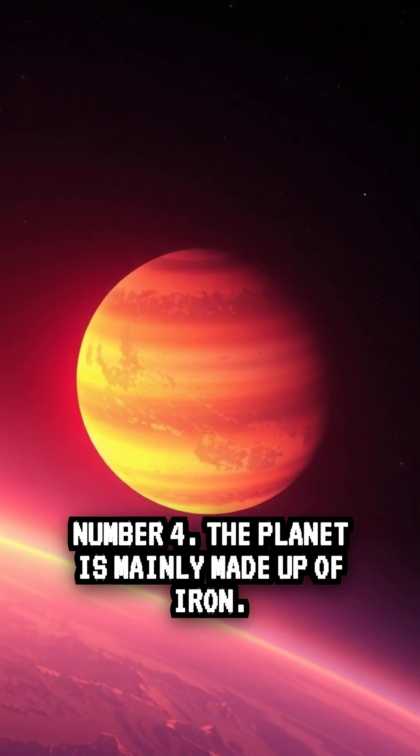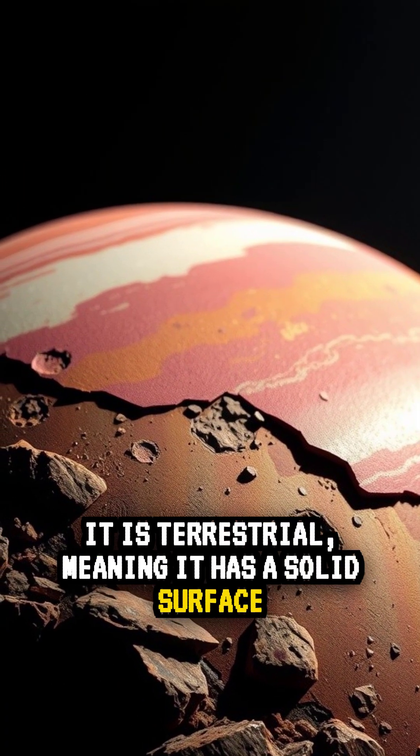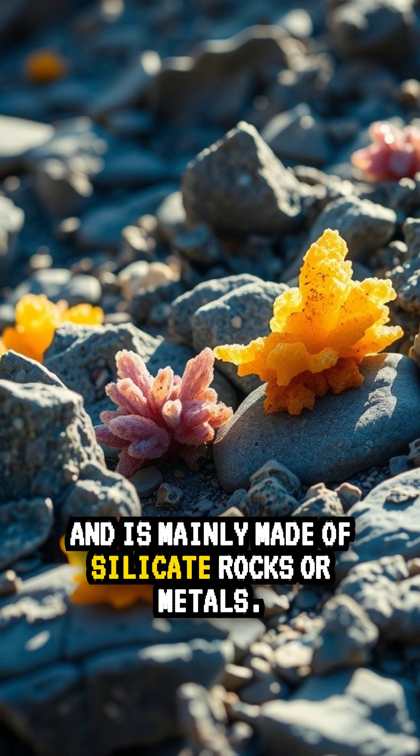Number 4. The planet is mainly made up of iron. It is terrestrial, meaning it has a solid surface, and is mainly made of silicate rocks or metals.